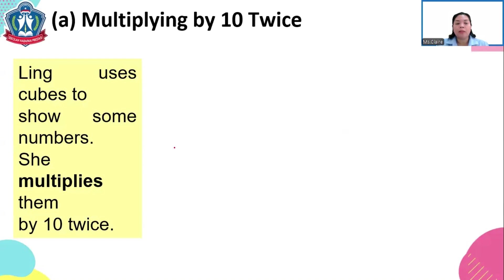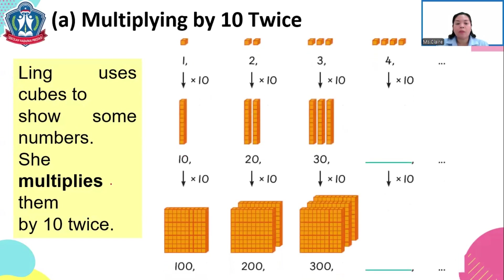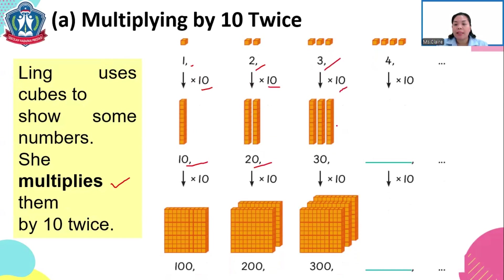Ling uses cubes to show some numbers and multiplies them by 10 twice. When we say multiplies, we are going to add a number many times — multiplying is repeated addition. So we multiply by 10 two times: 1 times 10 is 10, 2 times 10 is 20, 3 times 10 is 30, and 4 times 10 is 40.